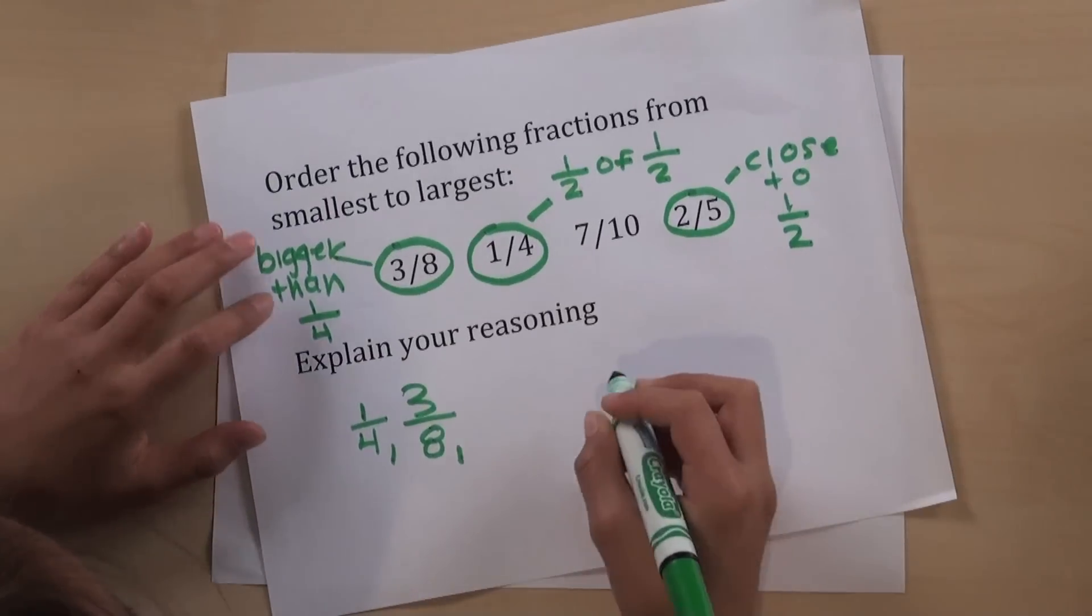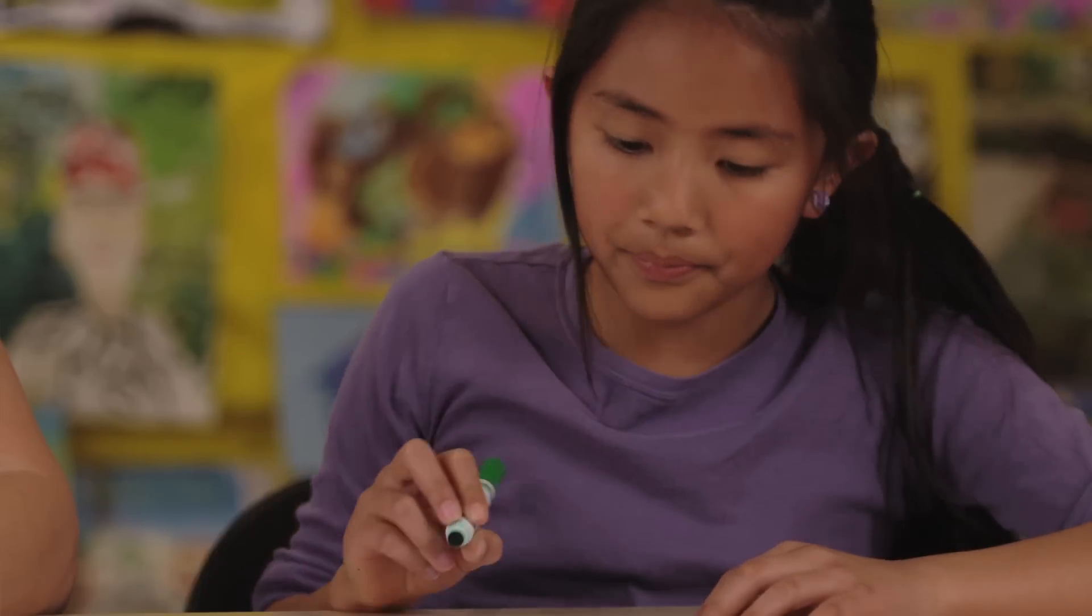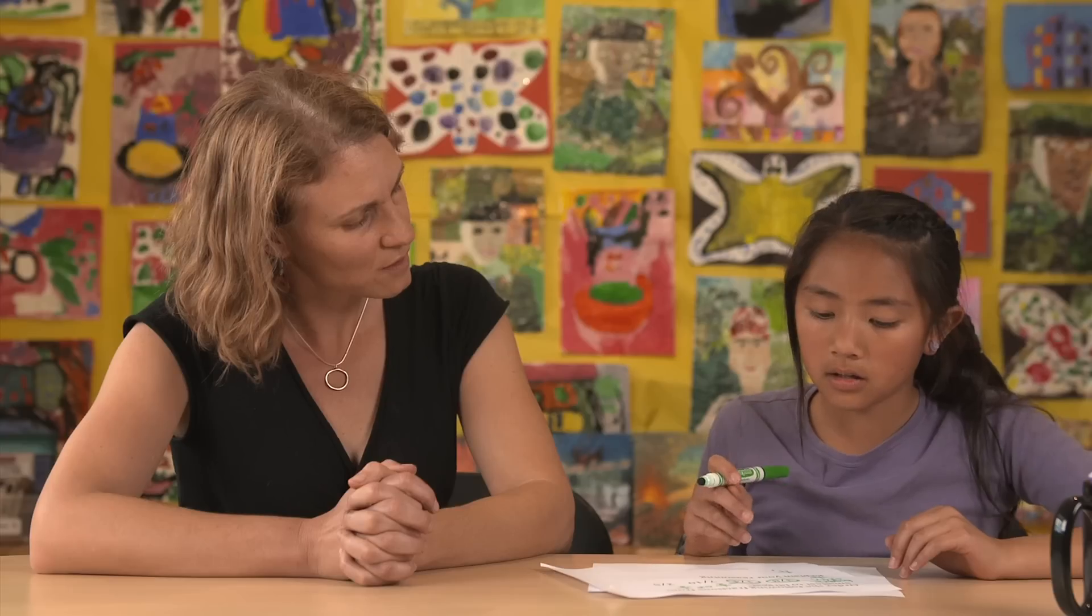Or by changing to a common denominator. And how do you know three-eighths is bigger than one-fourth? Because two-eighths equals one-fourth, and this is three-eighths. It's just one-eighth bigger.